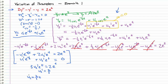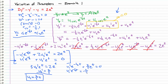Now we substitute u2 prime equals two-thirds back into the constraint equation. We get u1 prime e to the negative one-half t plus two-thirds e to the t equals zero, so u1 prime e to the negative one-half t equals negative two-thirds e to the t. Dividing both sides by e to the negative one-half t gives u1 prime equals negative two-thirds e to the three-halves t. Integrating, we get u1 equals negative four-ninths e to the three-halves t. We have successfully solved for both u1 and u2.